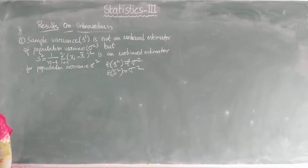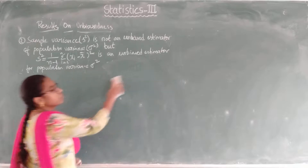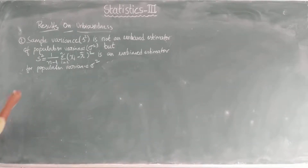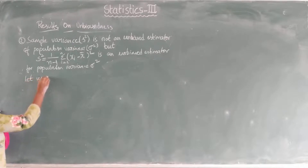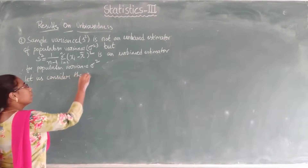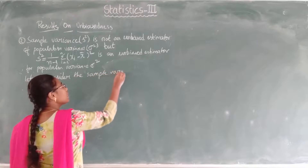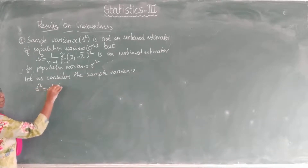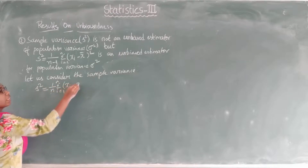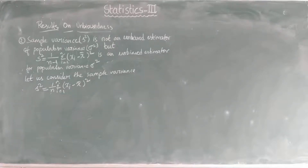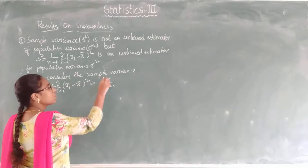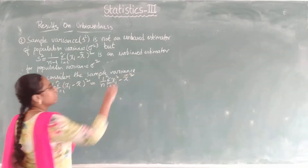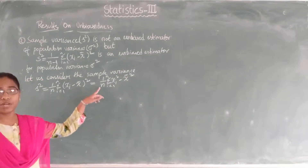To prove this, consider a random sample drawn from a population. Let us consider the sample variance: small s² equals 1/n times summation from i=1 to n of (xᵢ - x̄)². For simpler calculations, this sample variance can also be written as 1/n times summation of (xᵢ² - x̄²). We will use this simplified formula.